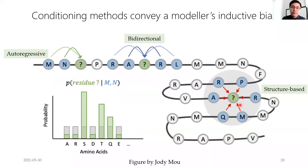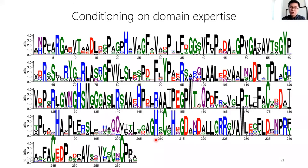You can also condition on domain expertise. If you have an enzyme where you know the active site, you can specify not to change those residue positions — this is like Rosetta Design 101 with the res file. Generative modeling with machine learning is slowly catching up, allowing sampling where you condition on, for example, having a histidine at position 209 and allowing the model to sample all other positions.